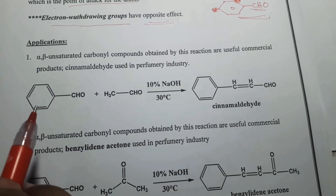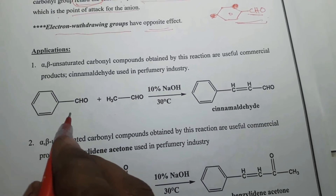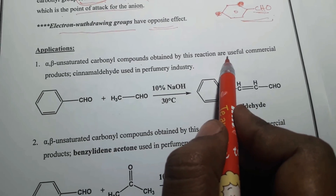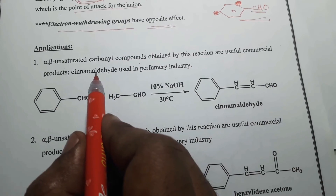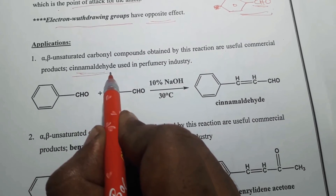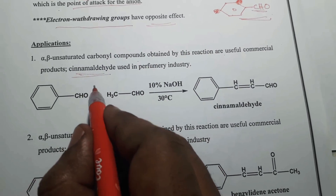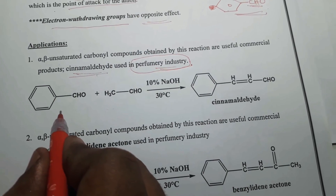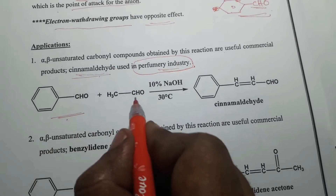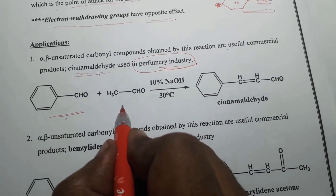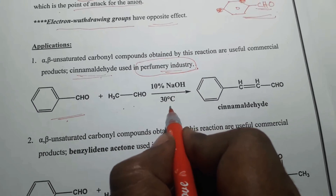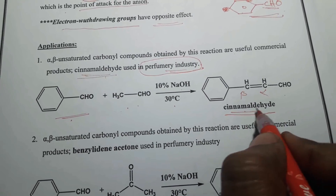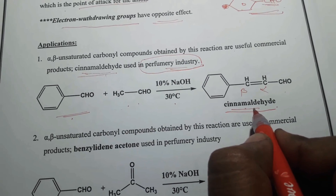Coming to the applications of Claisen-Schmidt condensation: alpha-beta unsaturated carbonyl compounds are obtained by this reaction, which are of commercial importance. Especially cinnamaldehyde can be produced by this reaction, which is used in the perfume industry. The reaction is: benzaldehyde reacts with acetaldehyde in the presence of a weak base at low temperature to give the alpha-beta unsaturated aldehyde cinnamaldehyde.